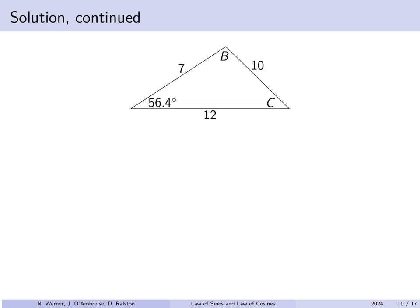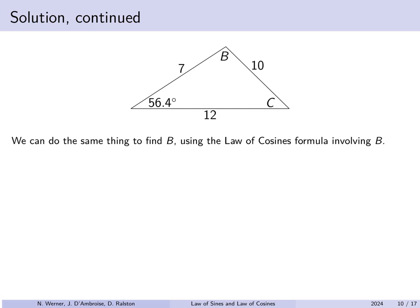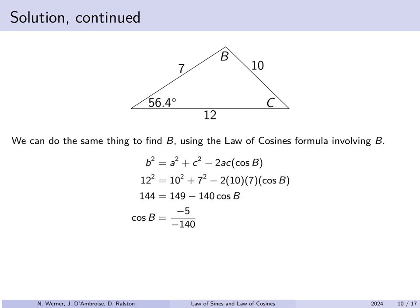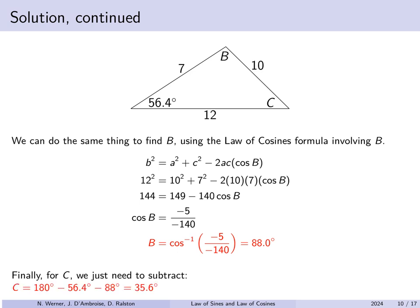Now we have found angle A as 56.4 degrees. Next, we find angle B using the version: b squared equals a squared plus c squared minus 2ac times the cosine of B. Plugging in the known side lengths and solving for the cosine of B, then taking the arc cosine gives angle B at the top of the triangle approximately 88 degrees. Now we've found two angles: 56.4 and 88.0 degrees. The third angle could be found using the law of cosines, but since two angles are known, angle C must be 180 minus those two, which is 35.6 degrees.